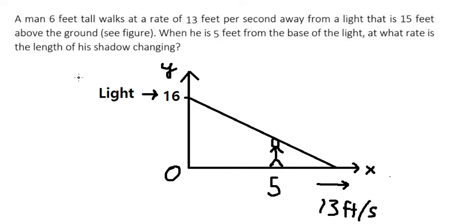Now I want to show you how to answer this problem. A man 6 feet tall walks at a rate of 13 feet per second away from a light that is 15 feet above the ground. When he is 5 feet from the base of the light, at what rate is the length of his shadow changing?